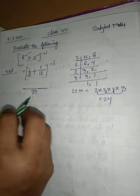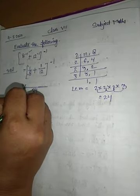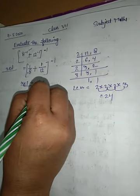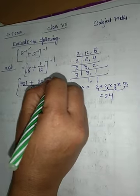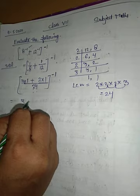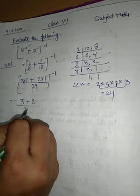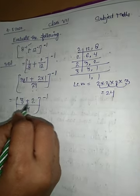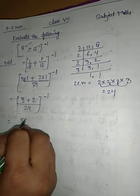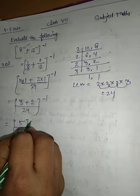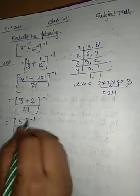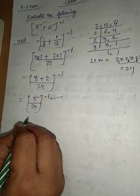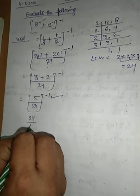So 8×1 is 8, 8×3 is 24 — so multiply by 1. Then 12×2 is 24 — so multiply by 1. Now it has the power minus 1. So 3×1 is 3, then 2×1 is 2, upon 24, all to the power minus 1. Now it is reciprocal because it has a minus power, so you have to reciprocal it. That means 24 upon 5.